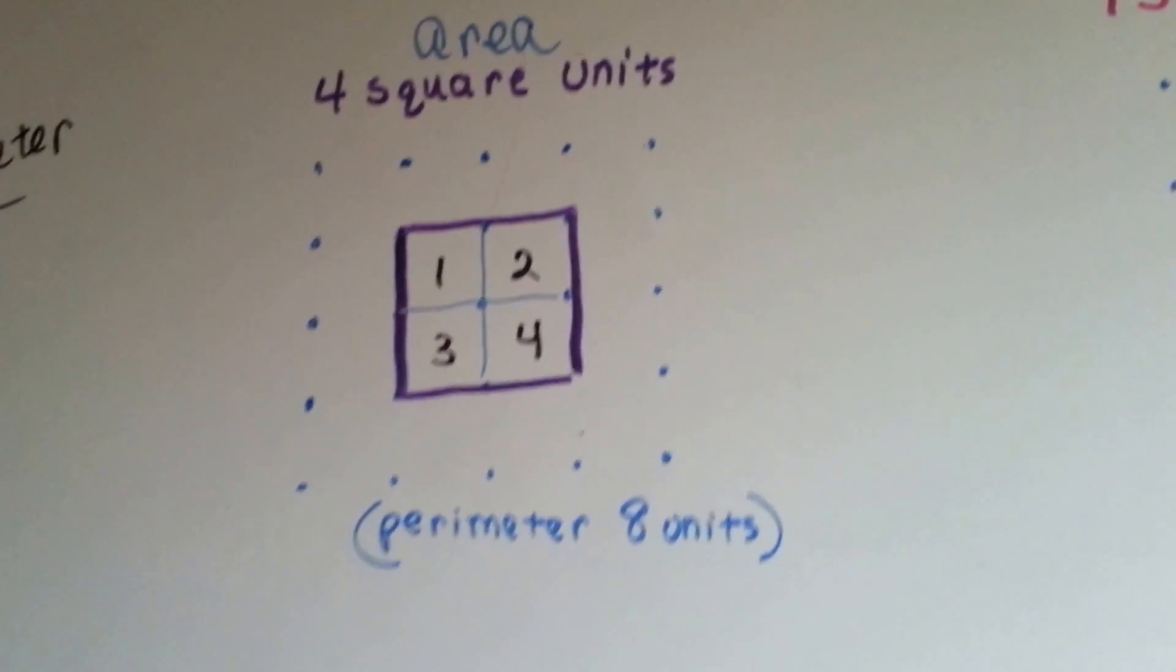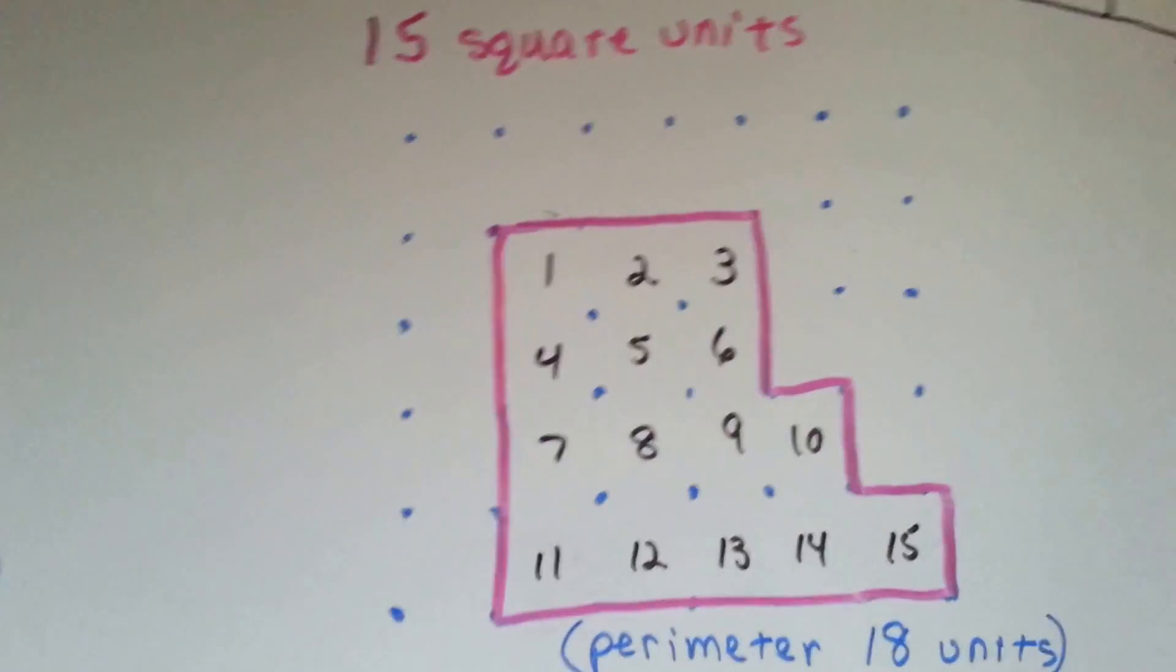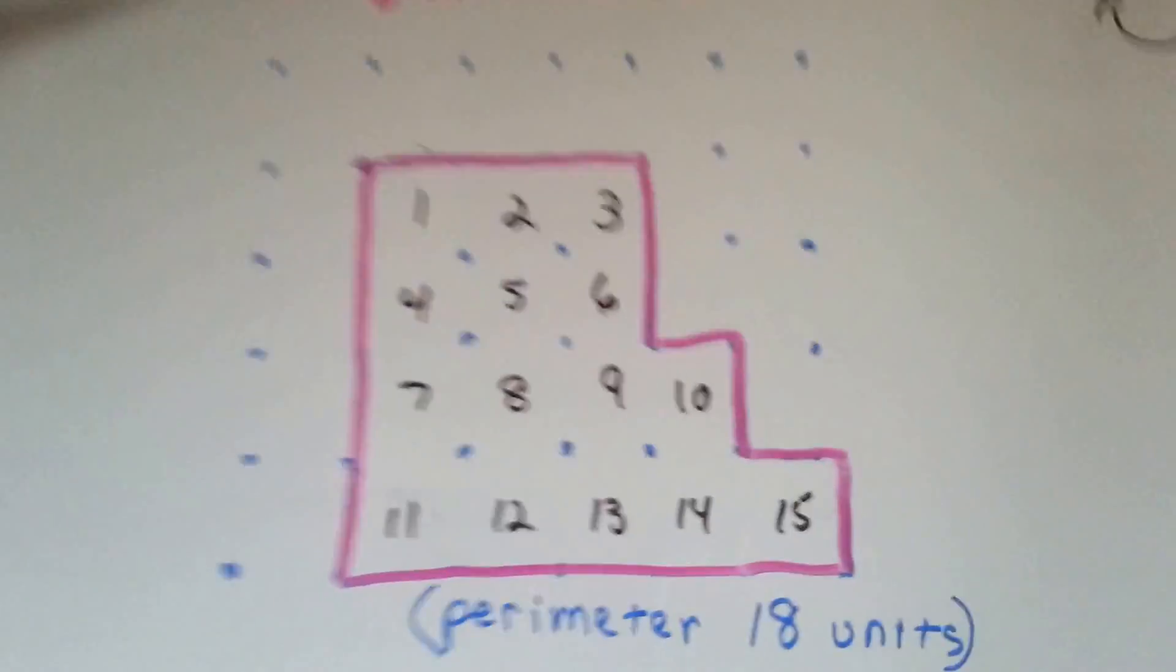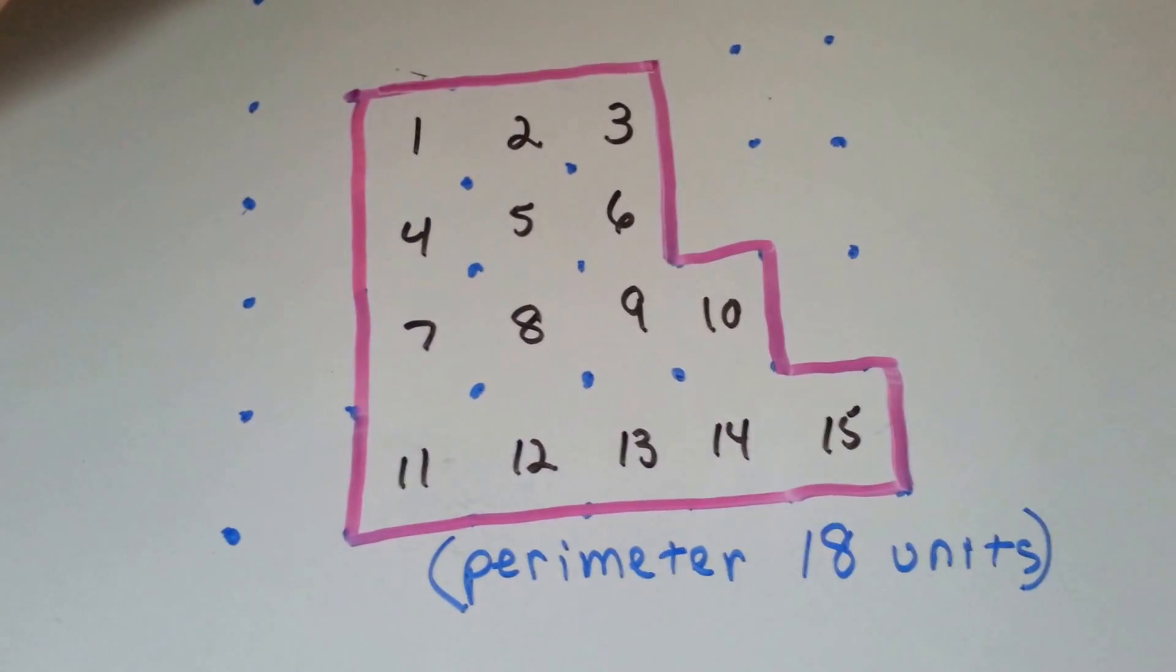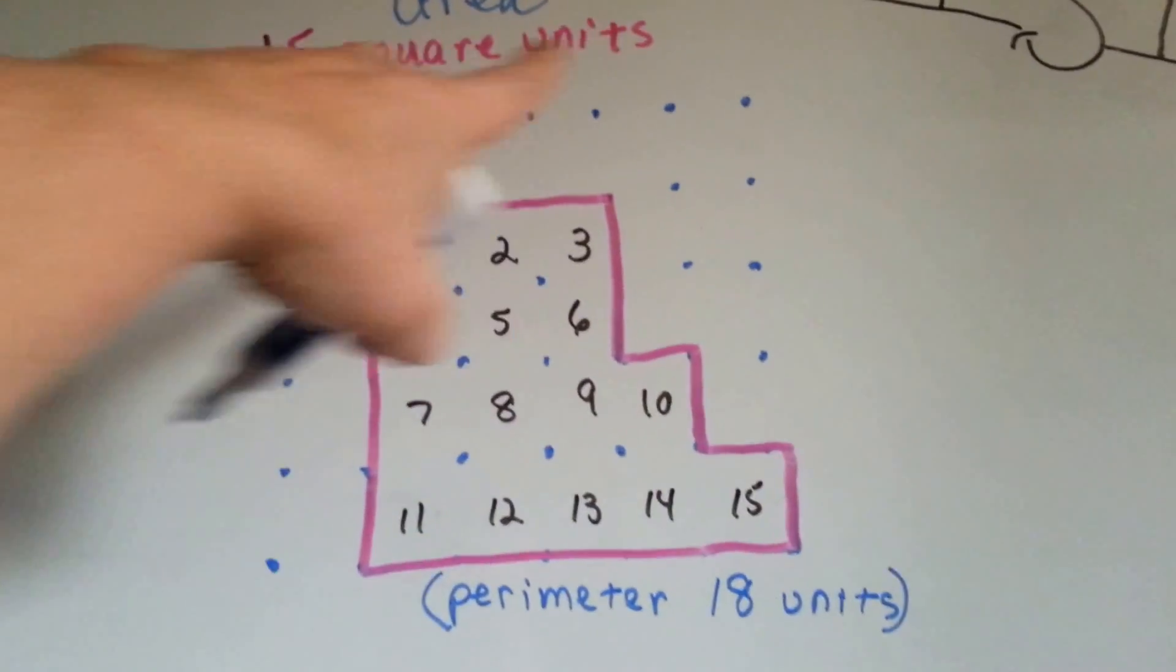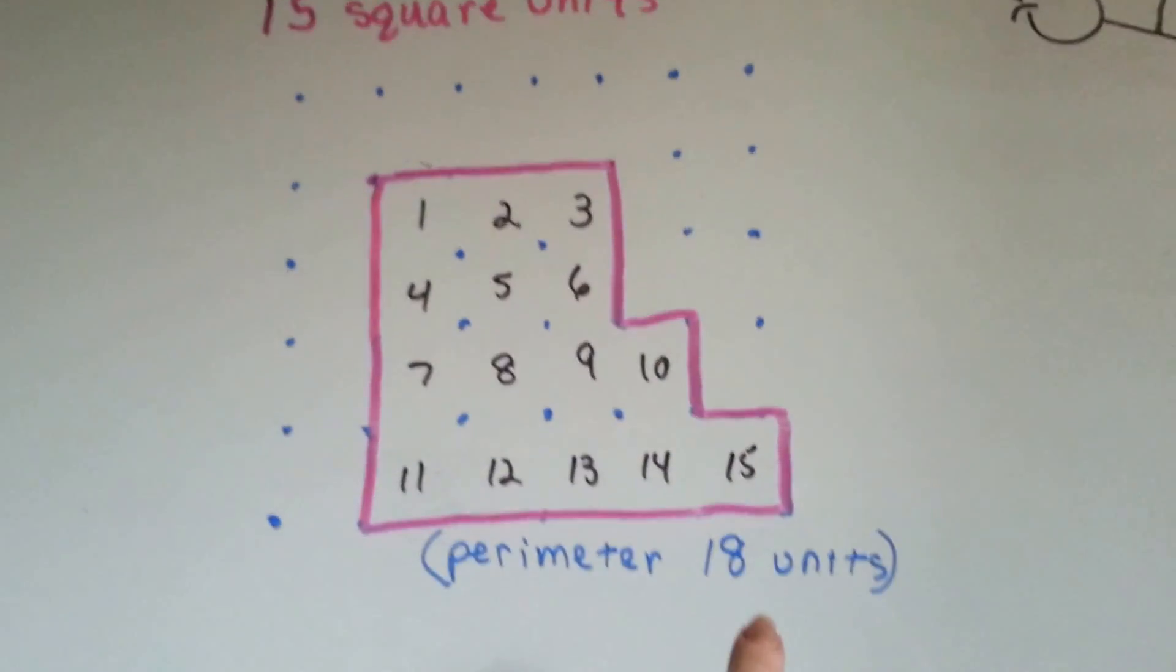See the difference? All right, let's try this one, it's a little bit bigger. The area is fifteen square units. The perimeter is eighteen units.